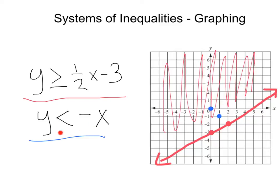And this time, since we don't have an equal to sign under the less than, we're going to have a dotted line. We can just draw our dotted line right in there. And since we're less than, we're going to be shading down or under in the negative direction.